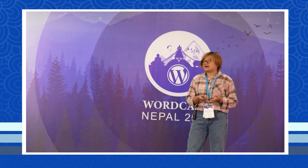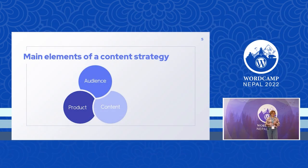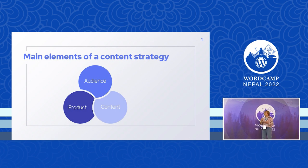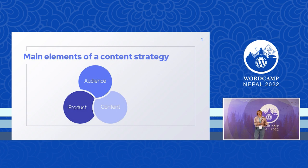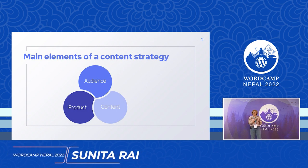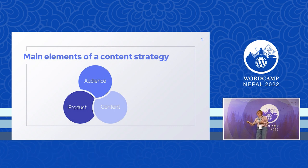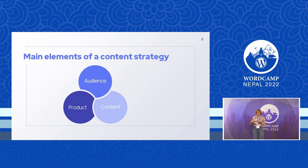Content marketing strategy basically has three elements. The first one is audience — a group of people who have a problem and are looking for a solution. Next comes your product: you identified that the problem exists and created a solution, that is your product. Then comes content — simply creating a product does not guarantee the right audience will know about it, so to let people know the product exists and solves their problem, you need content.